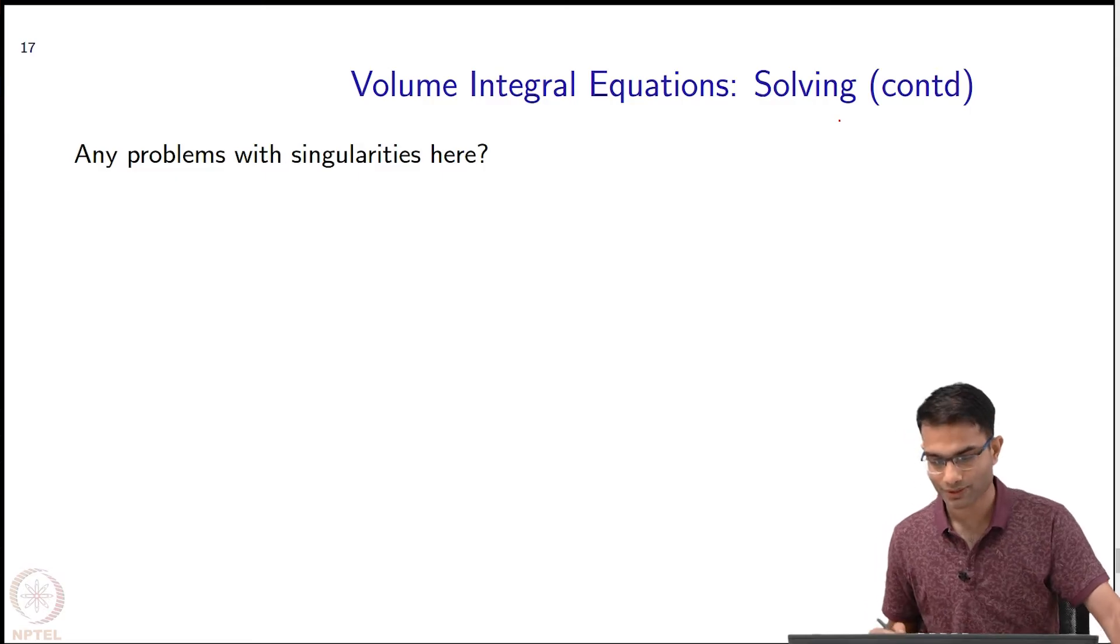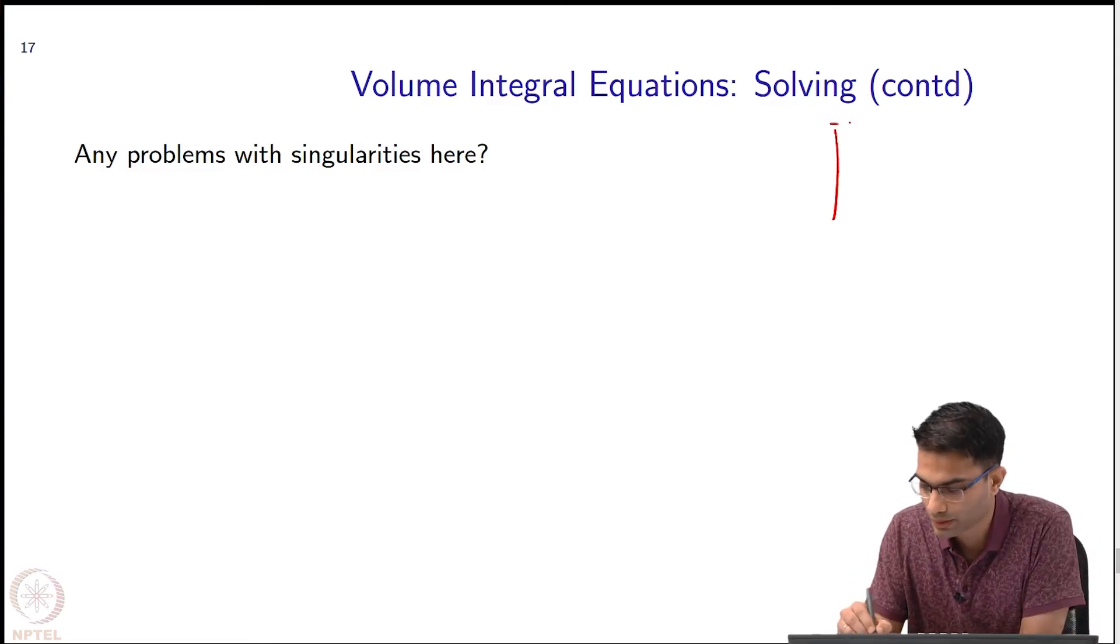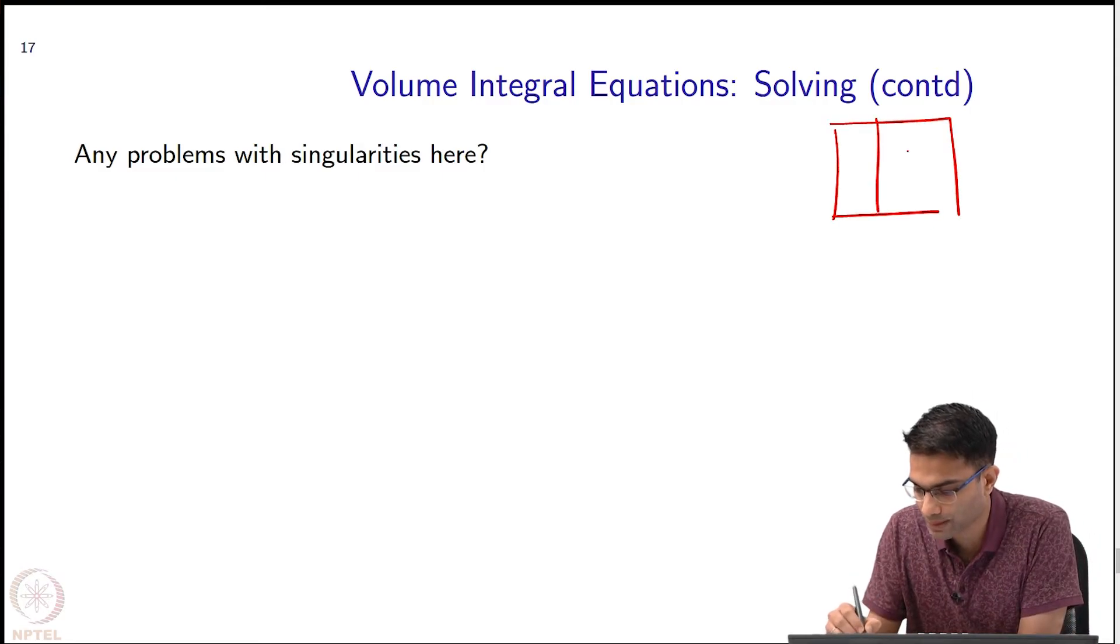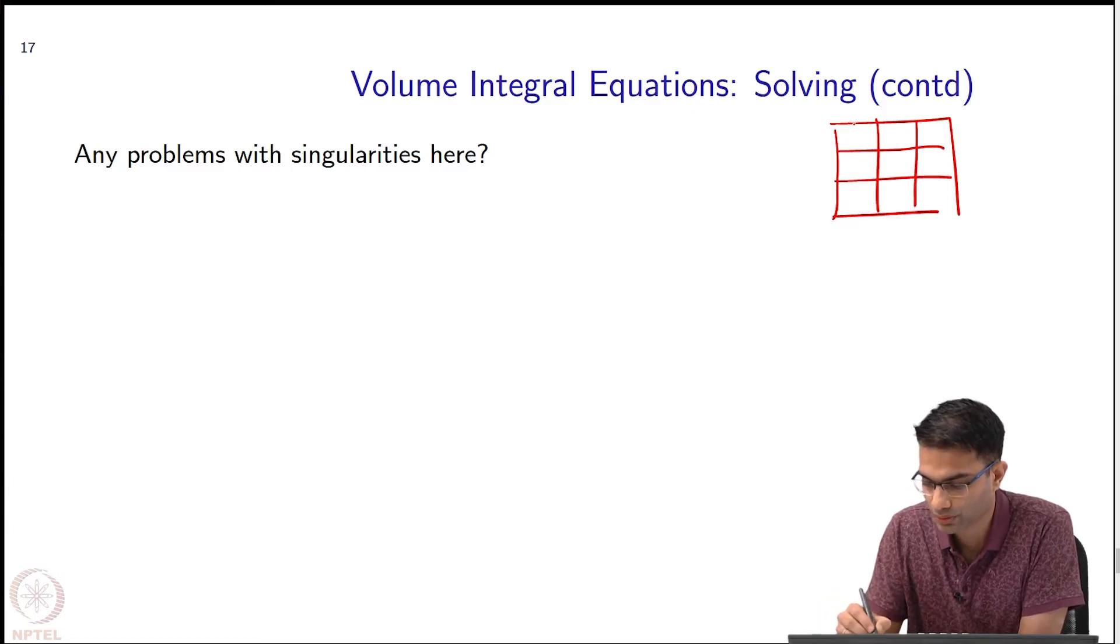Exactly, okay. So we are coming exactly to that. The question is: what happens when you integrate over a pulse where the Bessel function goes to zero?